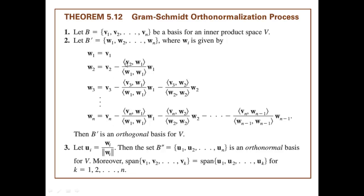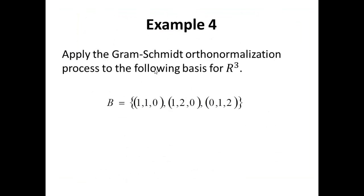Example: Apply the Gram-Schmidt orthonormalization process to the following basis for R3. Step 1: find B', which will be W1, W2, W3 — that would be an orthogonal basis. Step 2: find B', which will be U1, U2, U3, where each Ui is a unit vector. The set B' would be an orthonormal basis for R3, generated by the Gram-Schmidt orthonormalization process. I would leave the details as a simple exercise for serious students. Thank you very much.